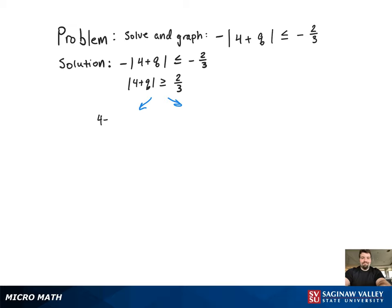Now we're going to break it up into two separate inequalities. Since it's absolute value greater than 2 thirds, the greater than means it's going to be an or statement.